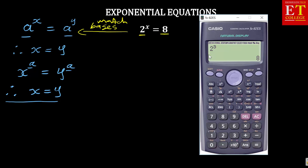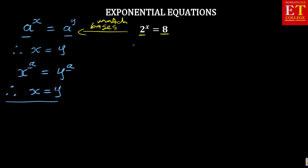So, in this case, you are going to say 2 to the exponent x is equal to 2 to the exponent of 3. Now, when the bases are the same, you equate the exponents. Therefore, x is simply equal to 3. So, that's how you can solve that.